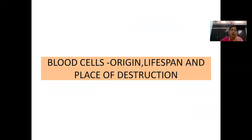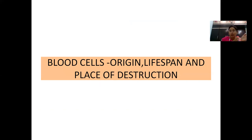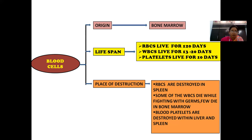Now we will learn where blood cells originate, what is their lifespan, and where they get destroyed. Blood cells get originated in the bone marrow. All three types — RBCs, WBCs, and blood platelets — are born in bone marrow. RBCs live for 120 days. WBCs live for 13 to 20 days on average (some WBCs live only 24 hours, some survive a few weeks). Blood platelets live for 10 days.